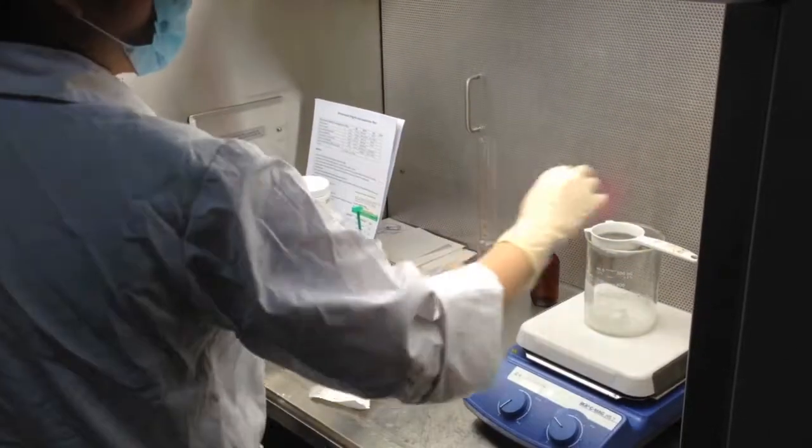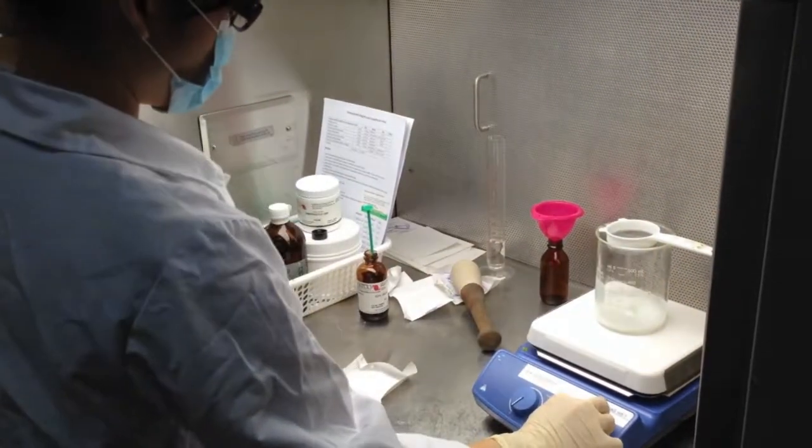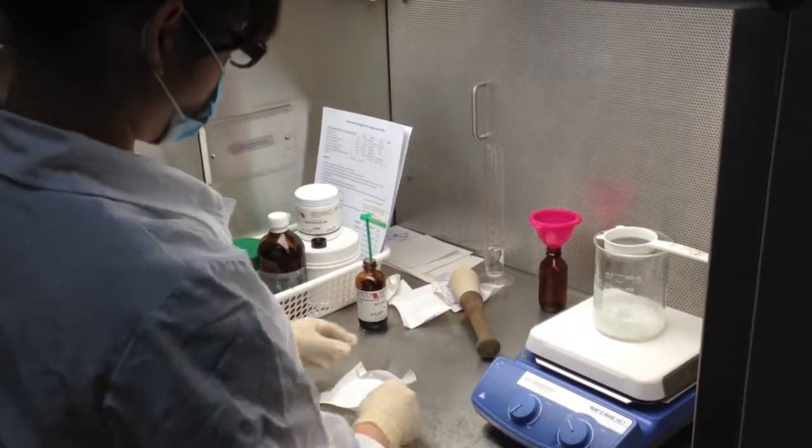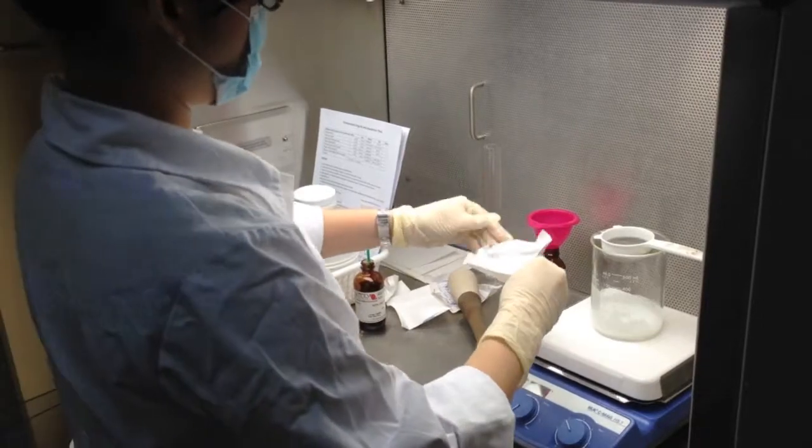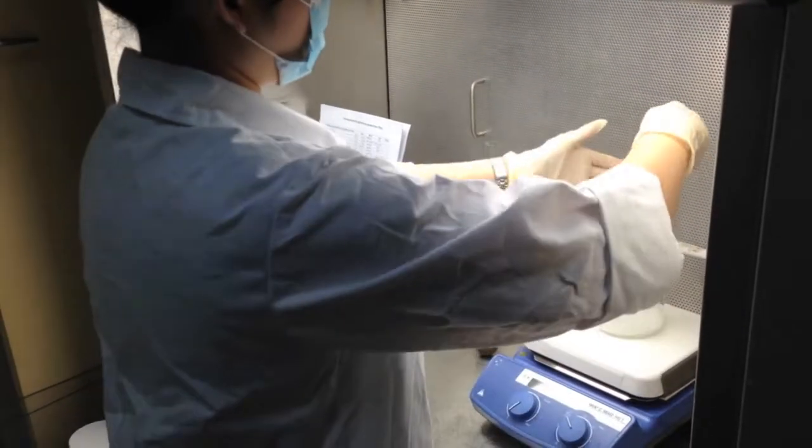The process begins with weighing of the ingredients followed by sieving these into the beaker. This is done so the particles going into the mixture are small and will mix thoroughly. Following this, the mixing process takes approximately 30 minutes.